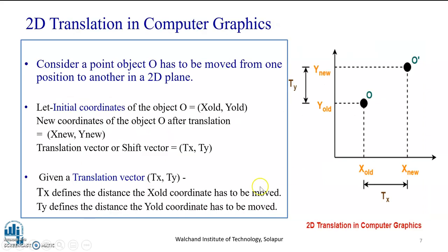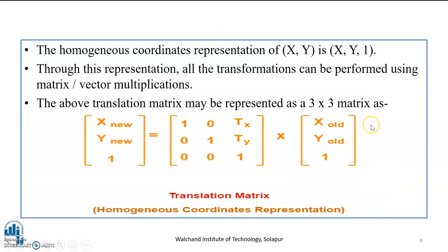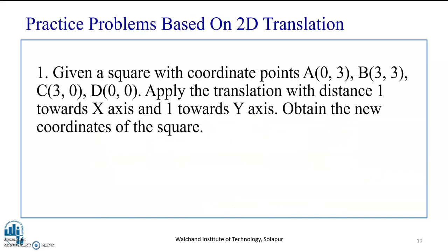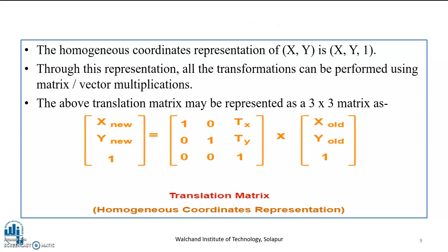Now, before we move ahead, we once again repeat that when a point is being shifted, that is translated, from one point location to another along a straight line path, the translation vector tx and ty is involved, which is represented in a homogeneous representation in the given format. Now, using this format, we will try to solve a particular practice problem. The problem is based on 2D translation. I hope you have understood the concept of translation, how we represent a translation matrix, what are the translation distances in respect to x and y coordinates, and how, for the sake of convenience, we have represented this translation matrix into a homogeneous coordinate representation.